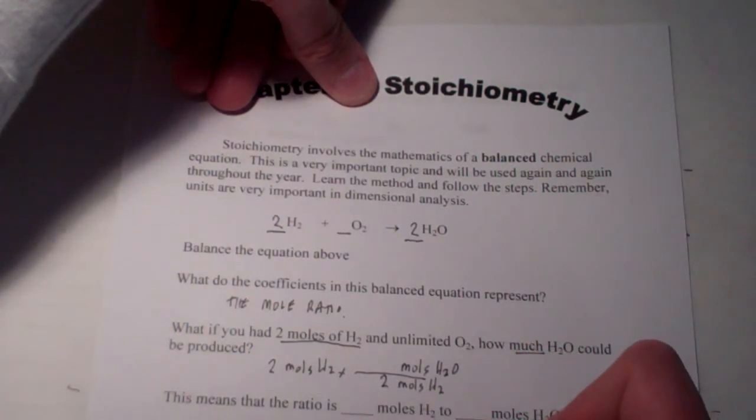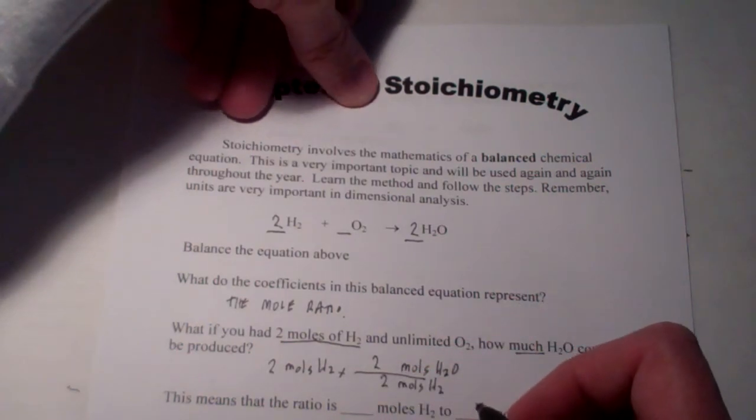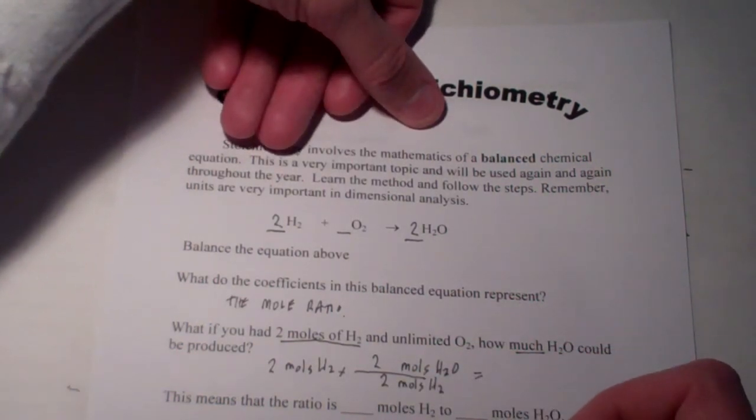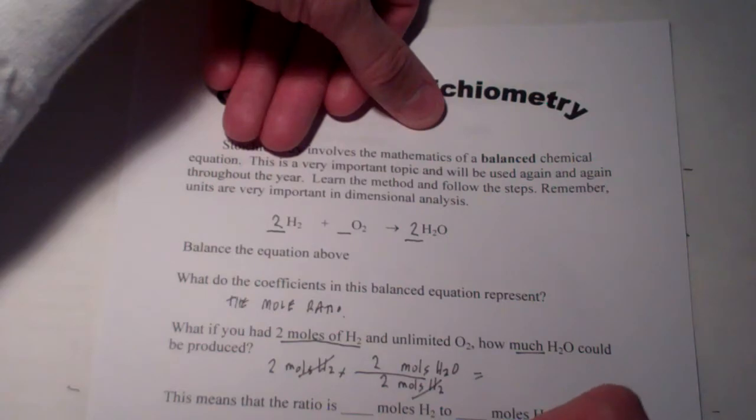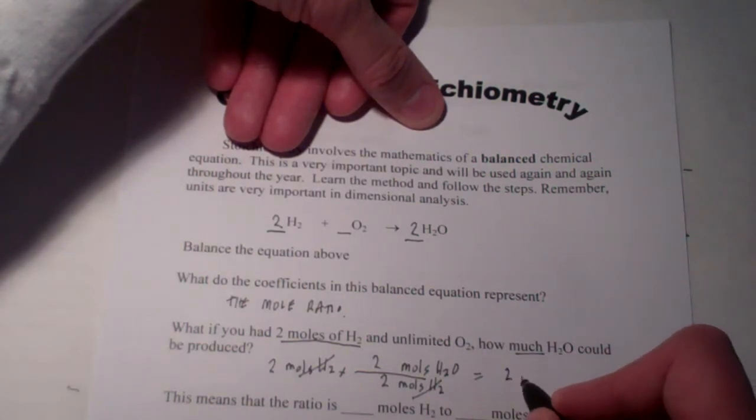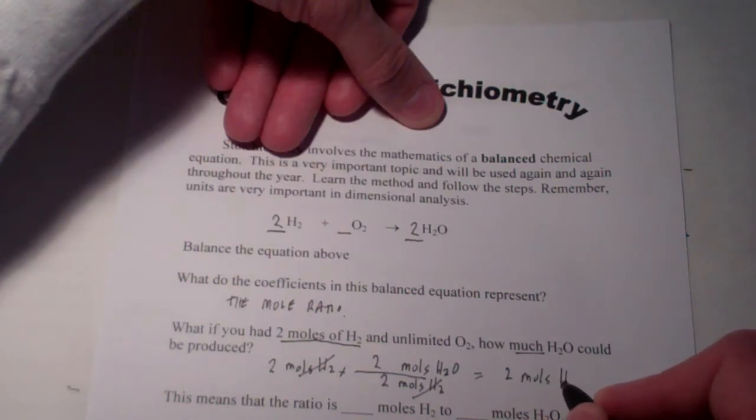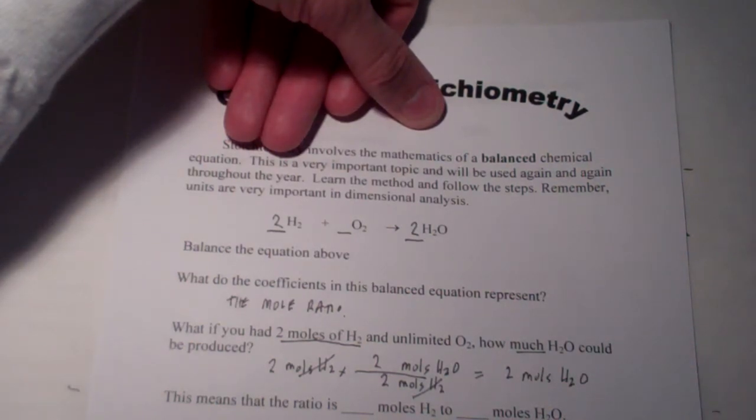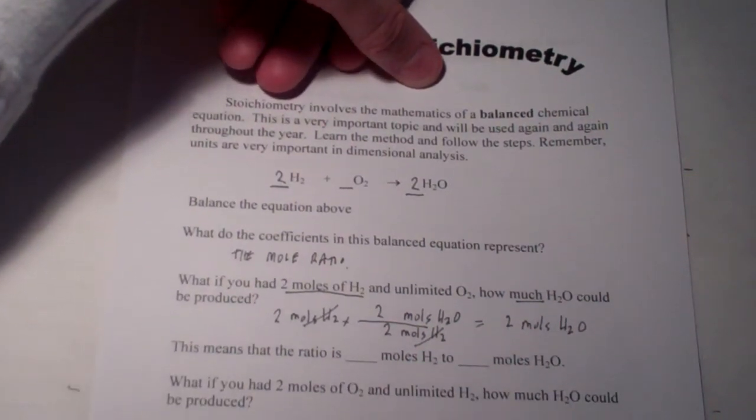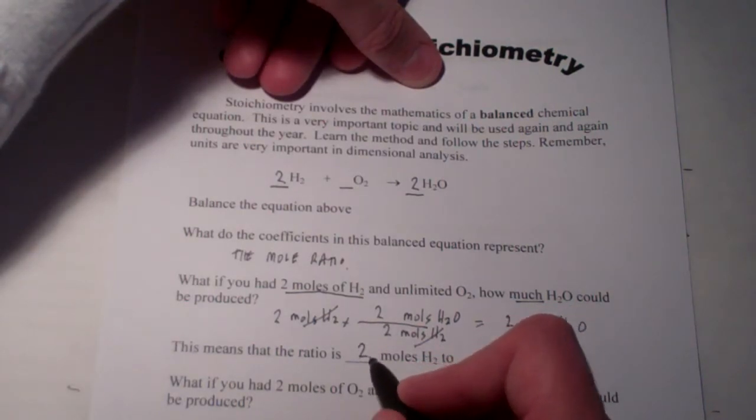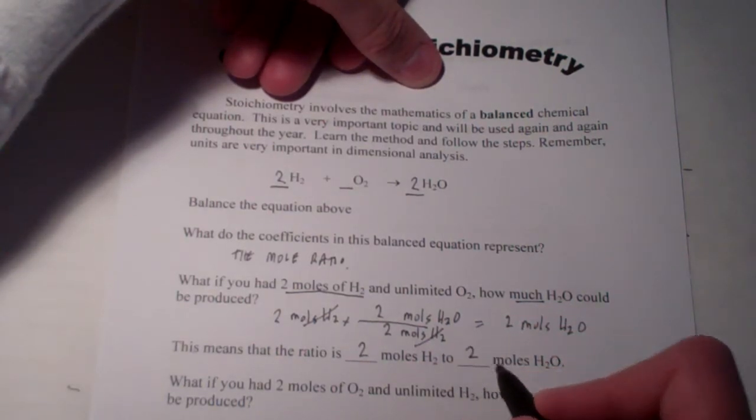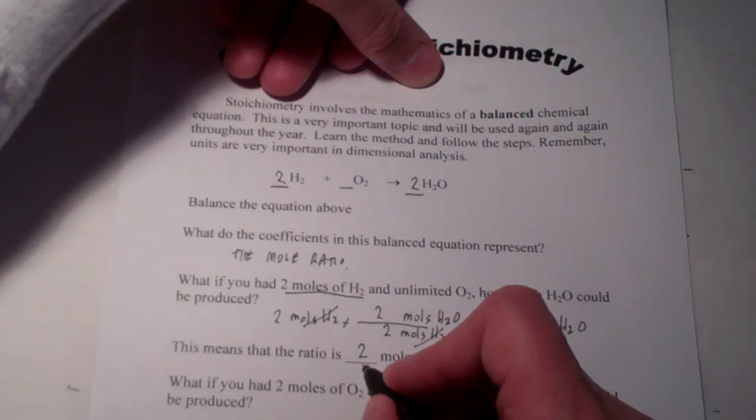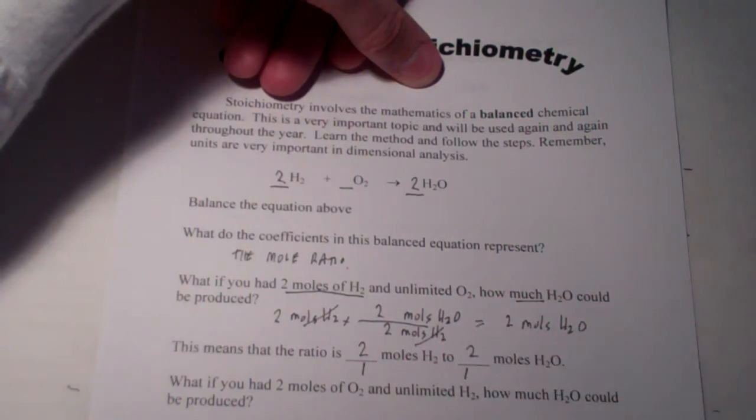the mole ratio in this equation is two hydrogens form two waters. So, two moles of hydrogen form two moles of water. We'll do the math. Moles of hydrogen divide out. We have two times two divided by two, which is two moles of water could be made during this reaction. This means that the ratio is two moles of H2 to two moles of water, or we could also say, in this case, one to one.